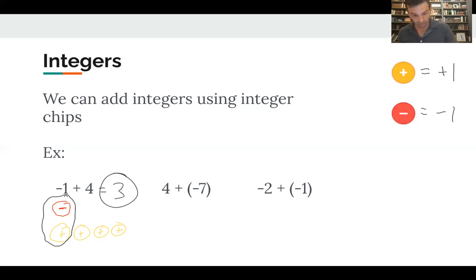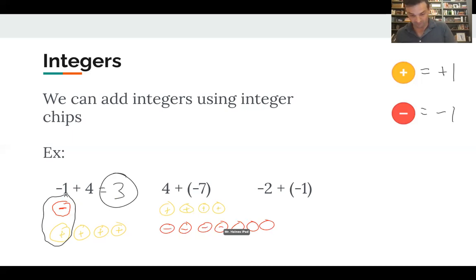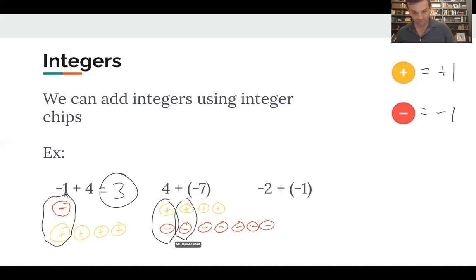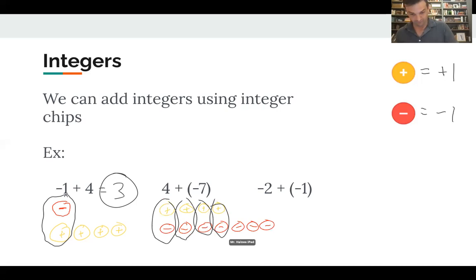For four plus negative seven: I draw four positive chips and seven negative chips. I find zero pairs — each positive chip pairs with a negative chip to cancel out. After creating all the zero pairs, I have negative three left over, so the answer is negative three.